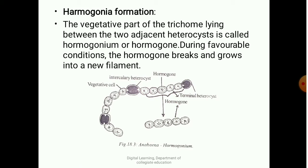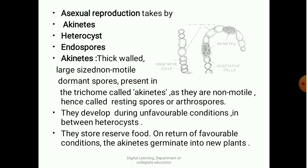Coming to asexual reproduction in Anabaena, this takes place by three important types of spore formation. These are: akinetes, heterocysts, and endospores.